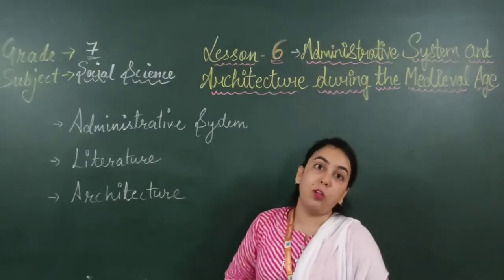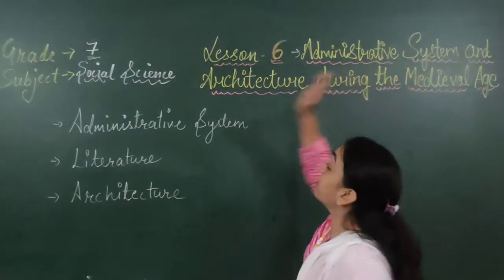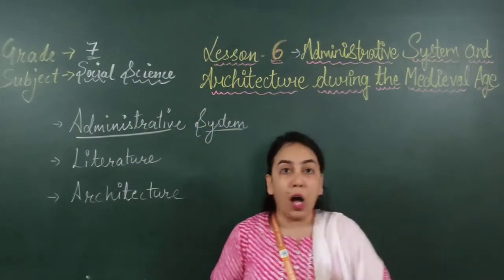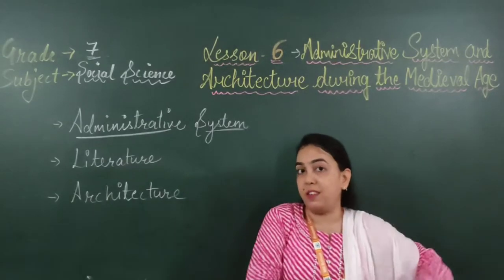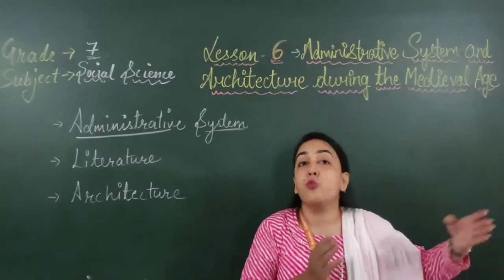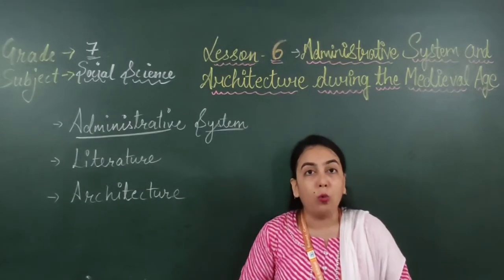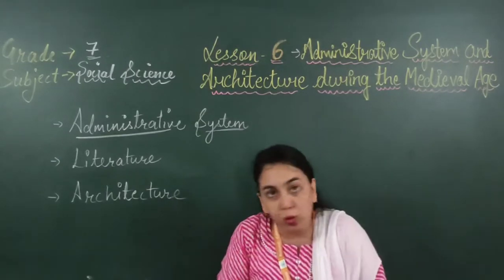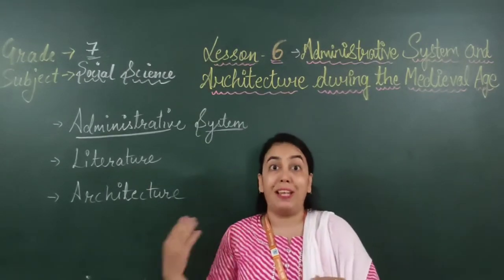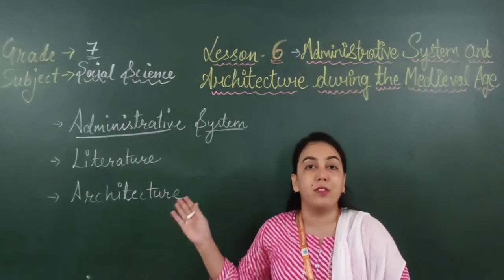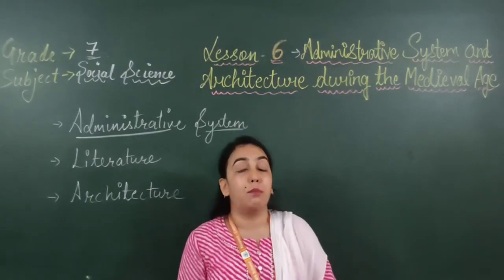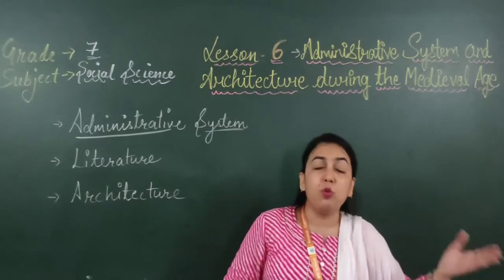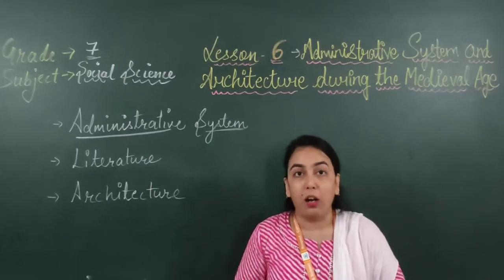First of all, we are going to learn about the administrative system. Administrative system means how the work was done at that time, how the king was ruling, how the people who were working under the king, what type of rules they were following, what type of management was there — that is called administrative system. We are going to learn that administrative system during the medieval age, which means when there were kings who were ruling on our country, India.